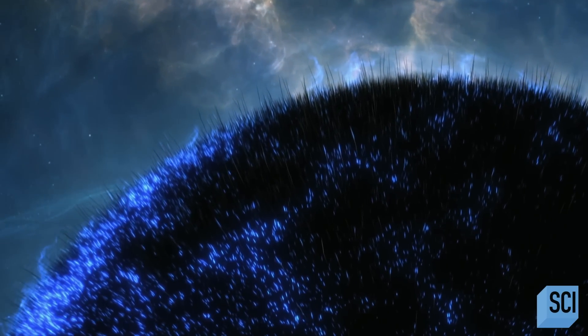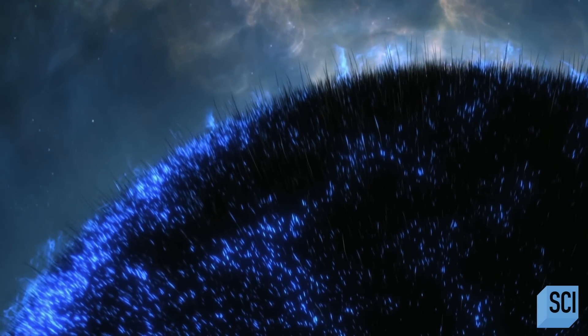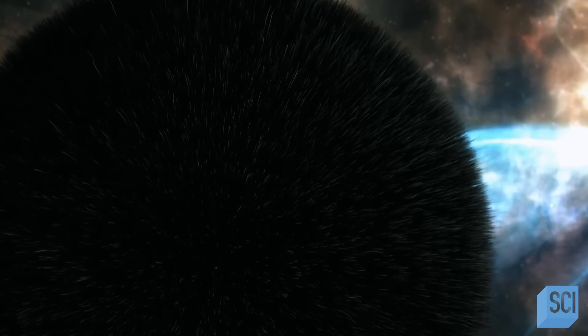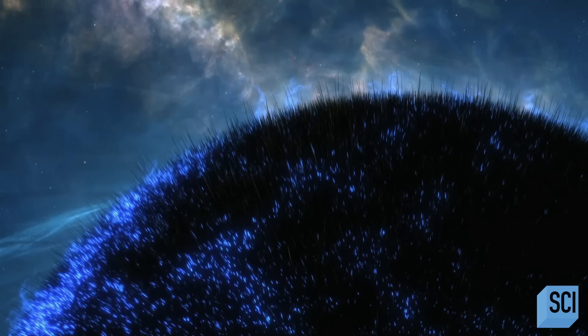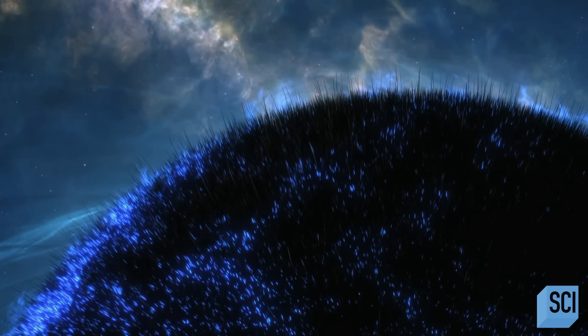Scientists propose that these so-called hairs somehow store the information of whatever has fallen into the black hole. The information is then imprinted on the thermal radiation emitted as the black hole evaporates.